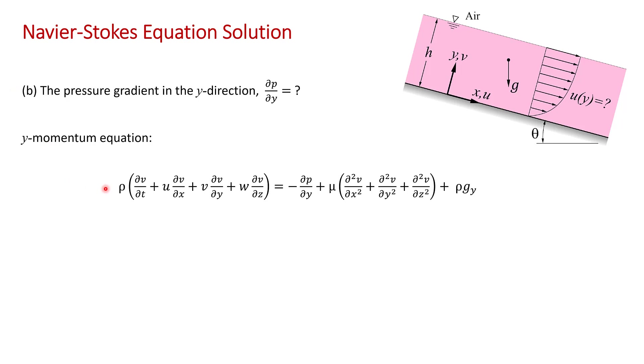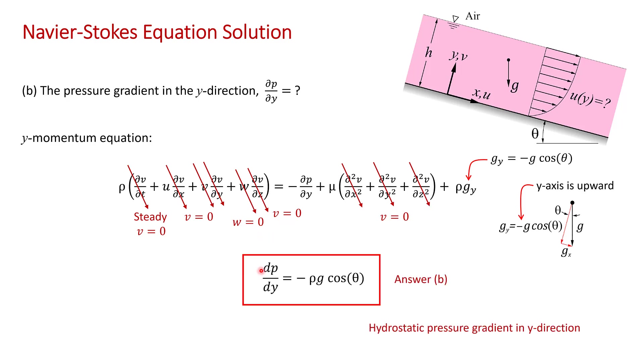Because v is 0 everywhere, this equation greatly simplifies. You can see almost all of the terms go to 0 because v = 0. We're left with the pressure gradient term. That's what we're after. And the gravity term ρgy. Now here you have to be a little bit careful because g acts in the downward direction, but the y coordinate points upwards. So gy is -g cos θ. So making that substitution and noting all the terms that have gone to 0, we get dp/dy = -ρg cos θ.